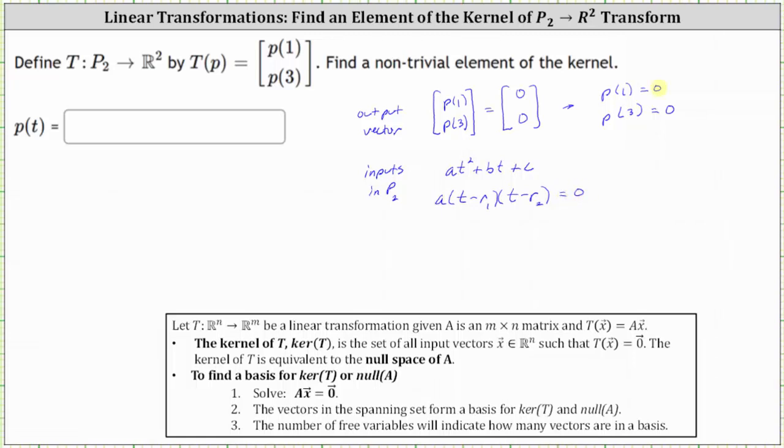And again, from here, we know p of one must equal zero and p of three must equal zero. And therefore, R1 must equal one and R2 must equal three, or we could also reverse these values.